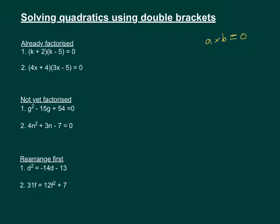So if we take this further, we've got k plus 2 equals 0, or we say that k minus 5 equals 0. So that means that k equals minus 2 or k equals positive 5. And that's our two solutions.